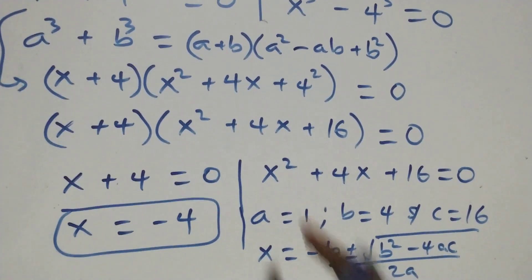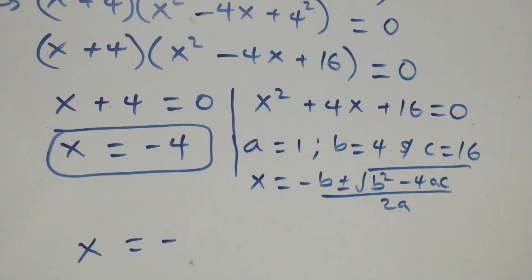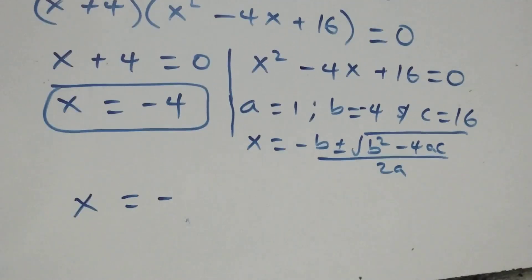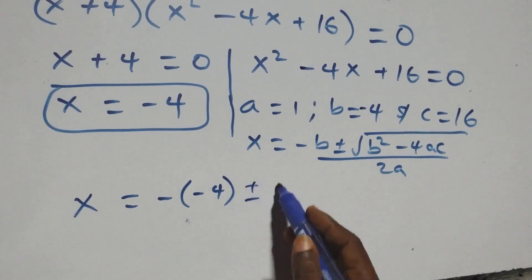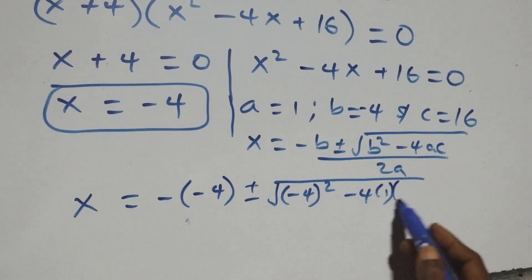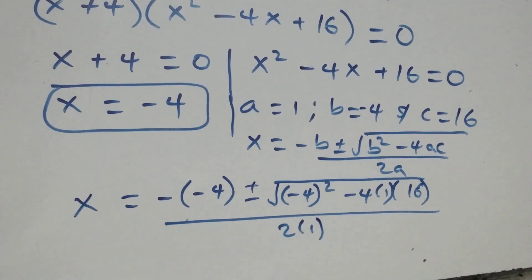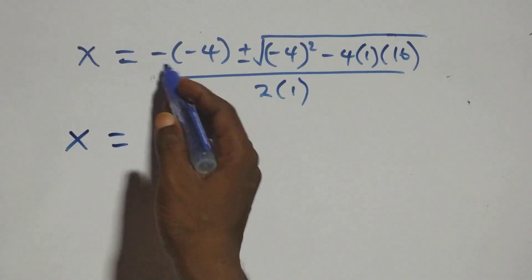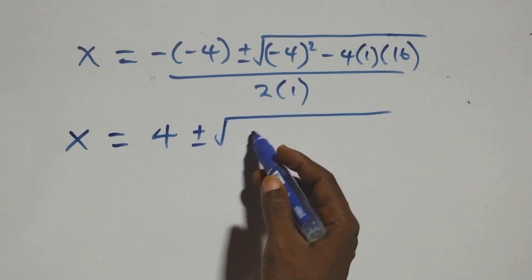Substituting in, we have x equals to minus 4 plus or minus square root of minus 4 squared minus 4 times 1 times 16, then over 2 times 1. That is, from here, minus and minus gives plus, so we have x equals to 4 plus or minus square root of 16 minus 4 times 16 over 2.